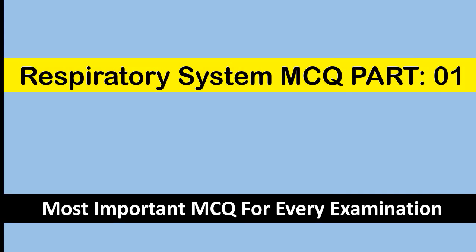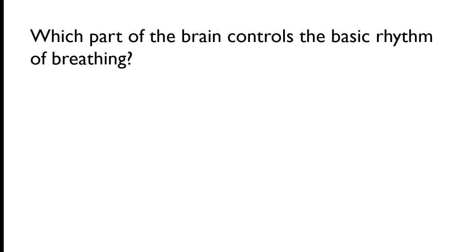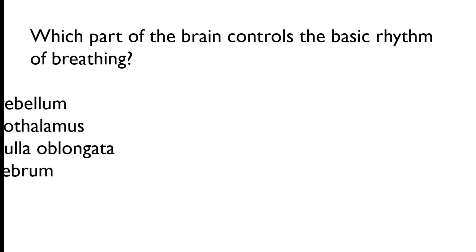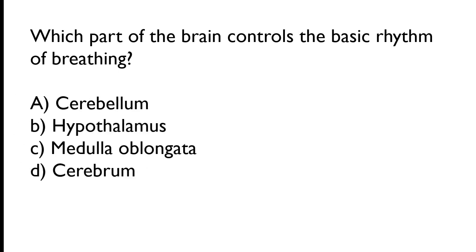Welcome to our channel MCQ1. In today's topic we will cover respiratory system MCQ Part 1. So let's start the video. Which part of the brain controls the basic rhythm of breathing? Cerebellum, hypothalamus, medulla oblongata, cerebrum.